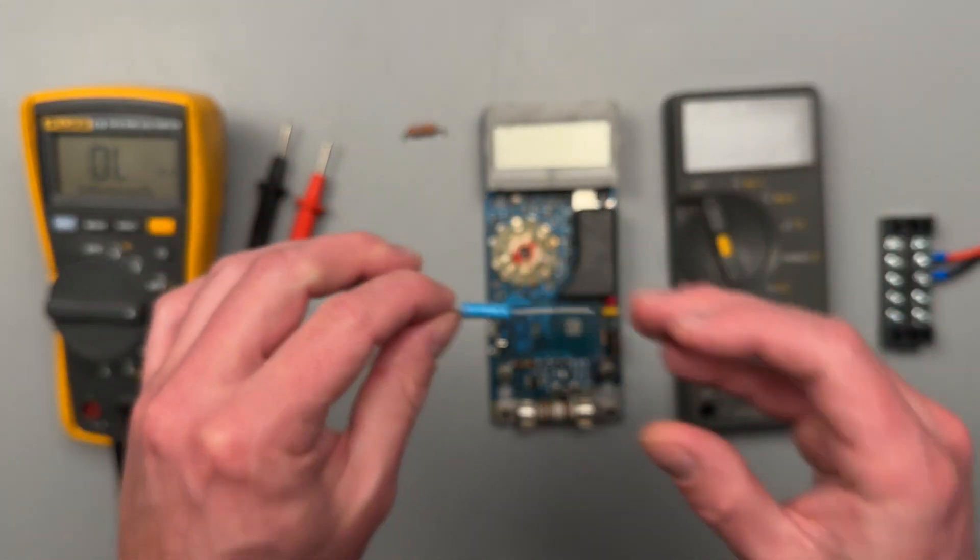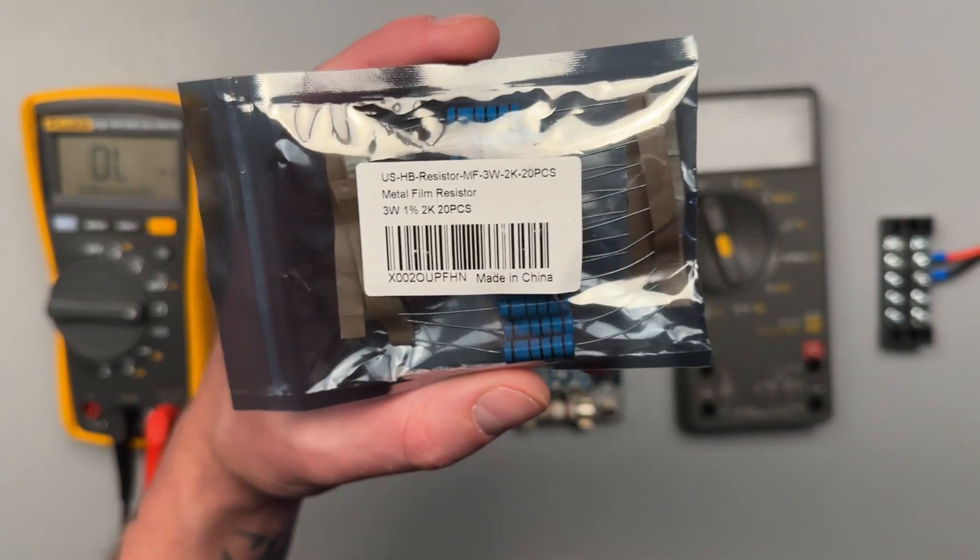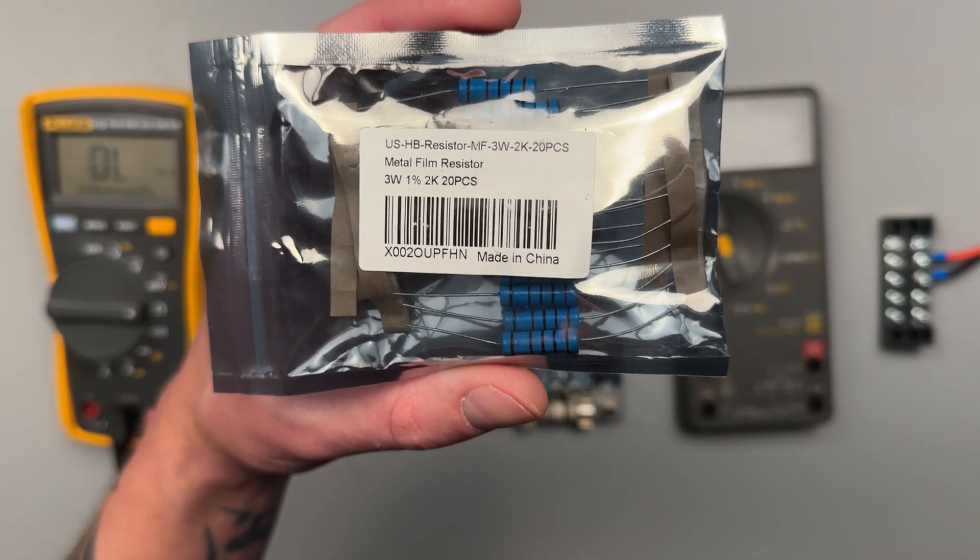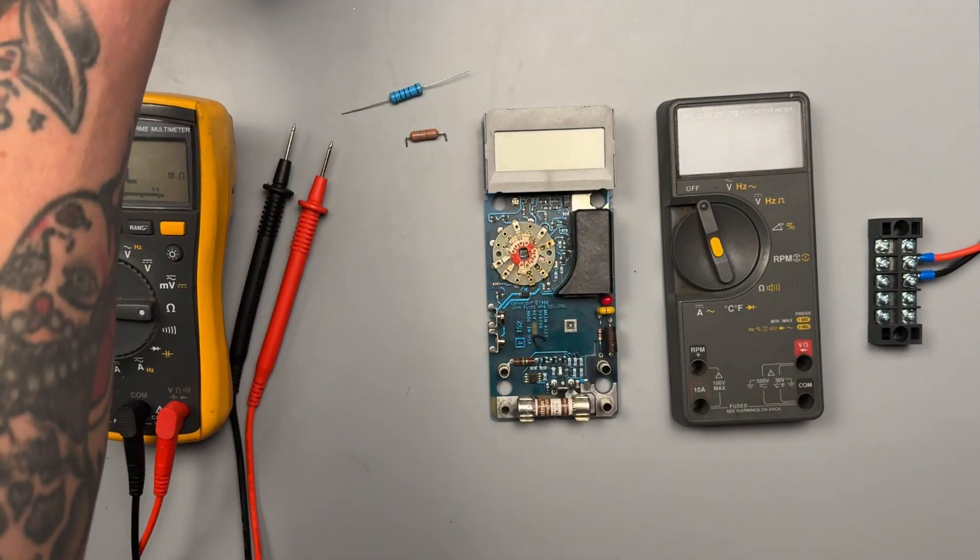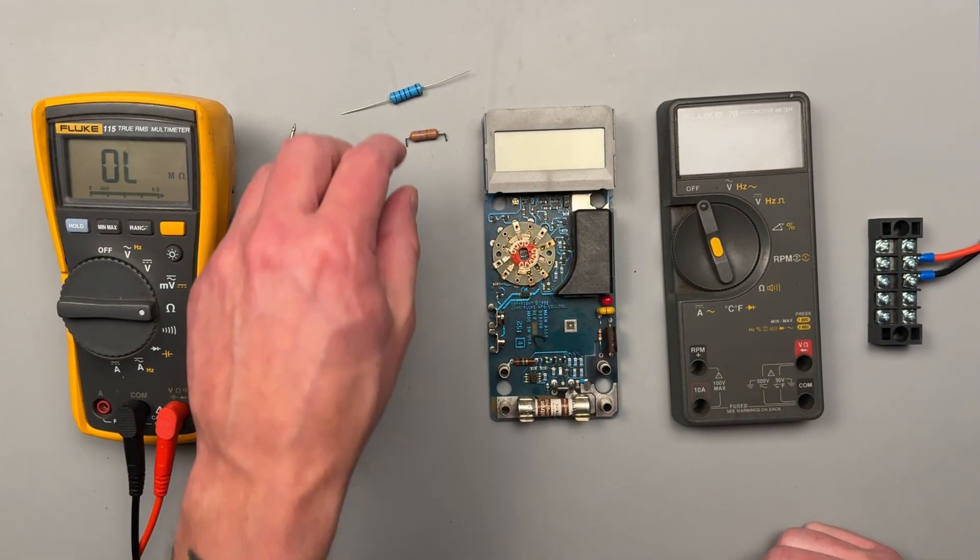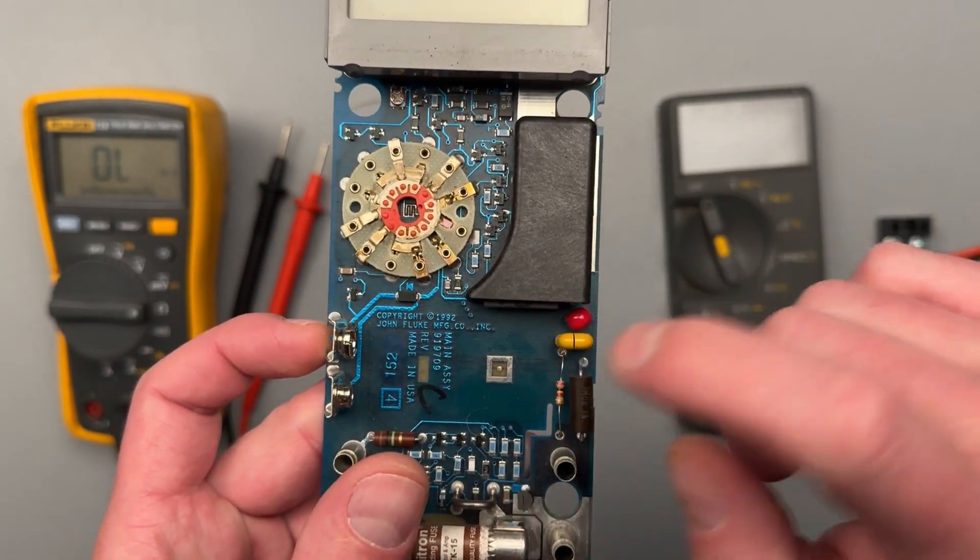And this is the closest that I could get. And if you are having the same exact issue with your Fluke 78, that is the part number for it. It's a three watt resistor, so it's a little bit beefier. My opinion, it's an upgrade. I'm not too worried about the fit because luckily we still have a lot of open space here.